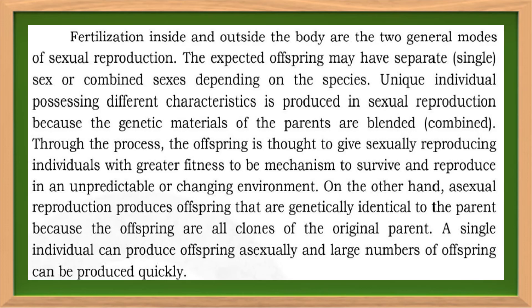Fertilization inside and outside the body are the two general modes of sexual reproduction. The expected offspring may have separate sexes or combined sexes depending on the species. A unique individual possessing different characteristics is produced in sexual reproduction because the genetic materials of the parents are blended or combined. On the other hand, asexual reproduction produces offspring that are genetically identical to the parent, because the offspring are all clones of the original parent. A single individual can produce offspring asexually and large numbers of offspring can be produced.